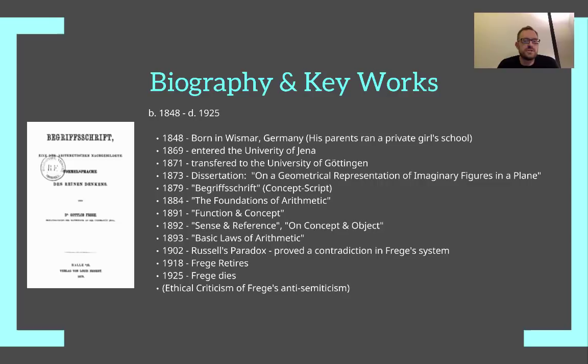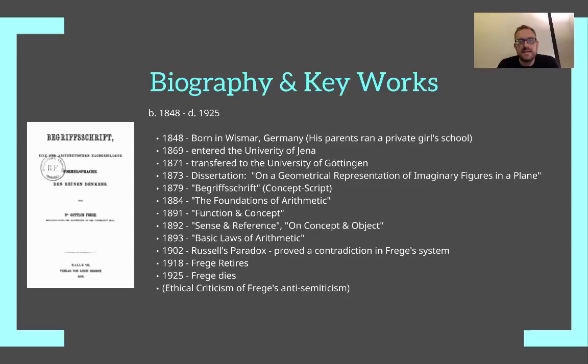By 1902, Bertrand Russell actually proved that there was a contradiction within Frege's system. Because of Russell's paradox, Frege was forced to recognize that his entire Begriffsschrift, as well as his work in the Foundations of Arithmetic, had been invalidated. Unfortunately, he was never really able to come back and prove logicalism, as was his goal. In 1918 Frege retired, and by 1925 he died.